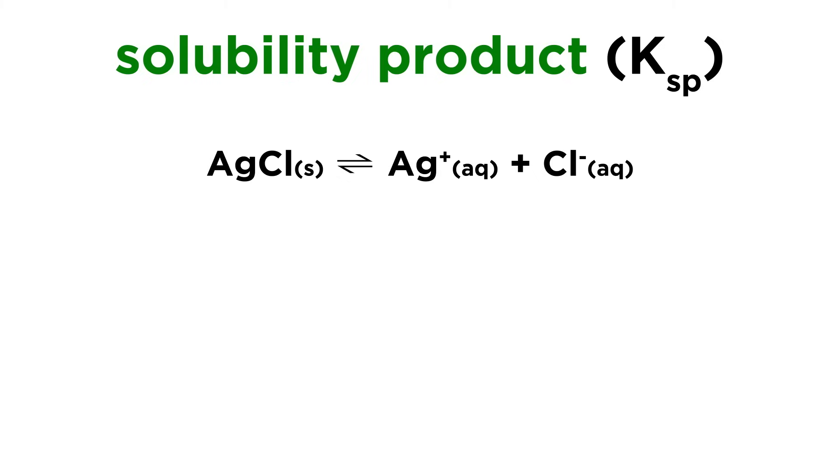Just as with any other type of equilibrium, there must be an equilibrium constant to describe it, and that's the solubility product. As we might guess, this will simply be equal to the product of the two ion concentrations in solution, each raised to the power of their stoichiometric coefficients, which in this case is simply one and one.